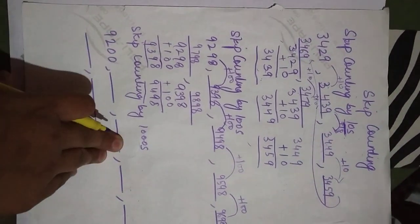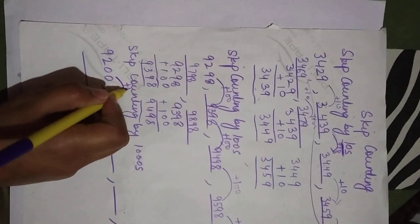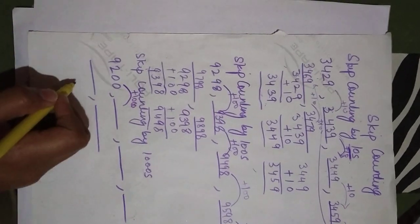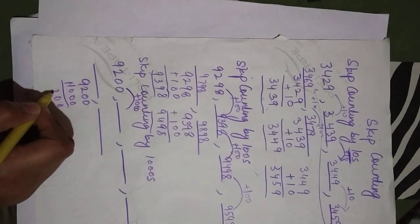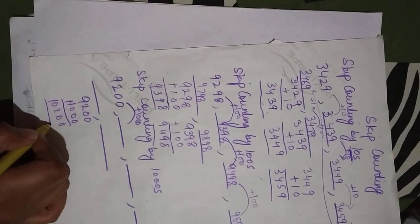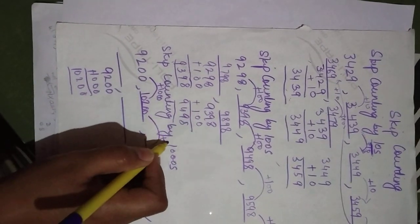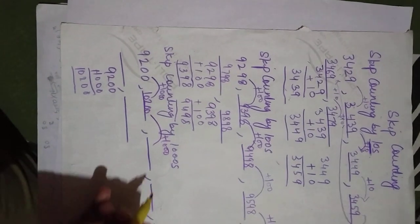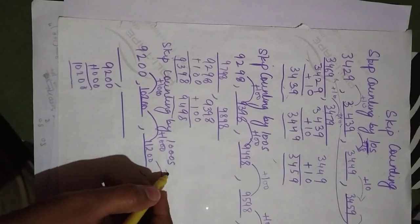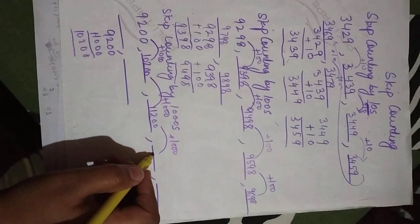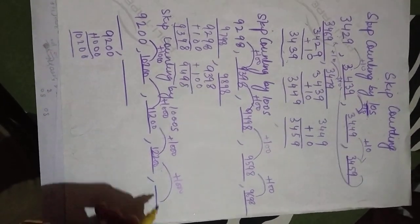Coming to skip counting by thousands — same procedure you have to follow. To get the next number, you have to add 1000 this time. We can add 1000 to it and you are going to get the next number. Again add 1000 if you want to get the next one — that will be 11,200. Again adding 1000, you will get 12,200. Similarly, keep adding 1000 and you will get the next number.